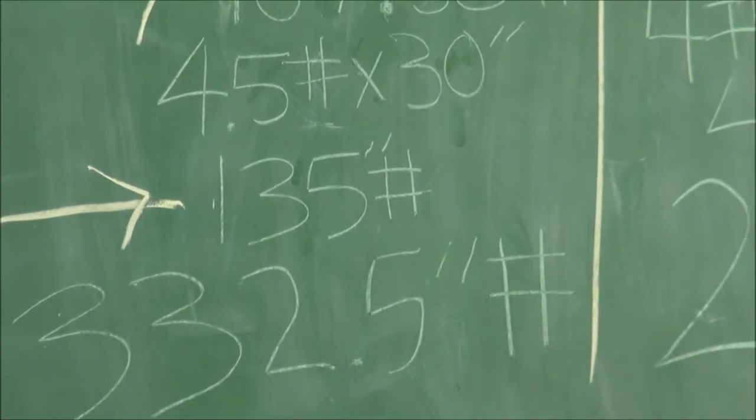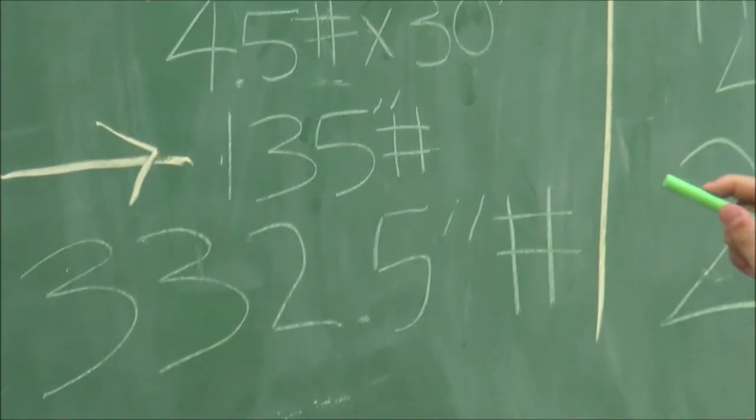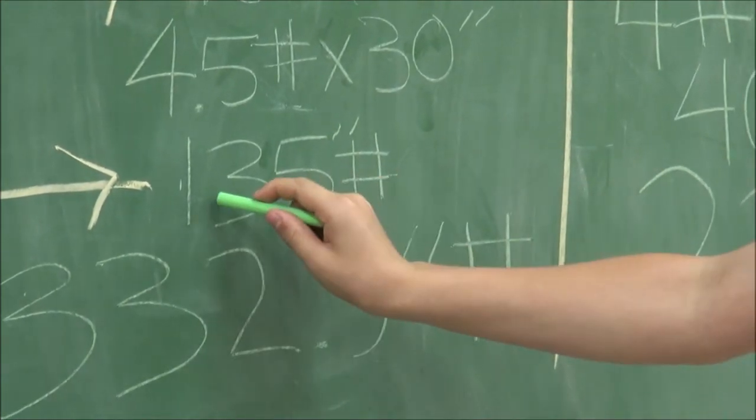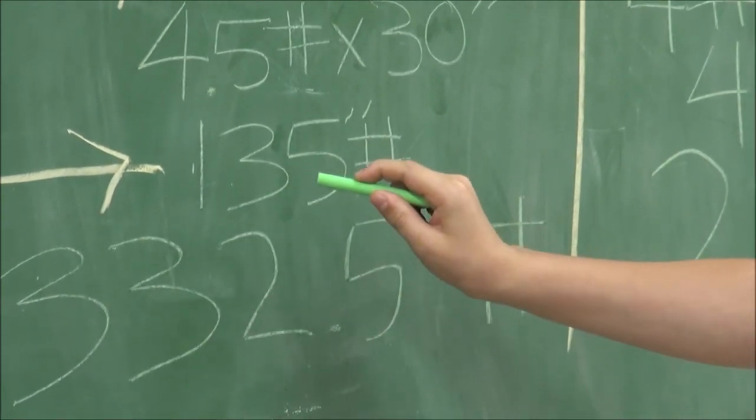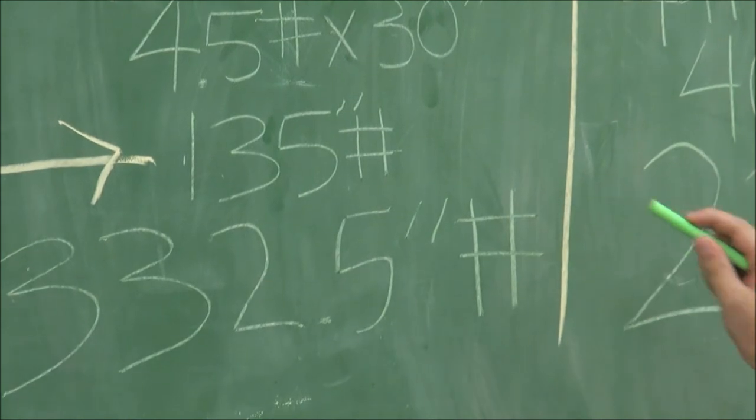The weight times distance equals 4.5 times 30, which is 135 inch pounds.